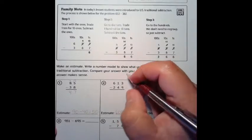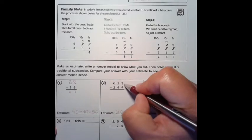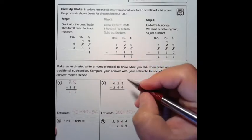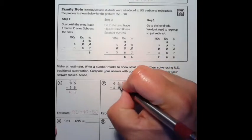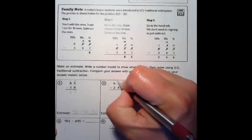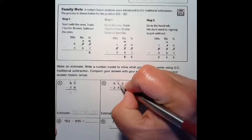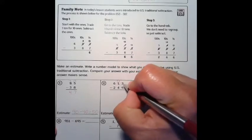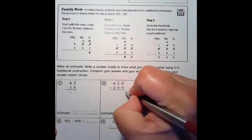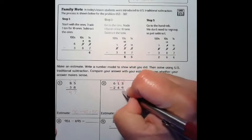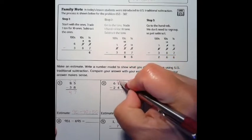Now, 3 take away 9, again we cannot do that, so we've got to trade. I take this 1, trade it in, it's going to become 0, and we're going to take that 10 that we're trading in for 10 ones, and we're going to add it to the 3 ones that we already have to make it 13 ones. 13 ones take away 9 ones are 4.